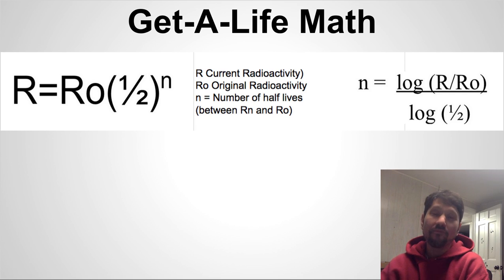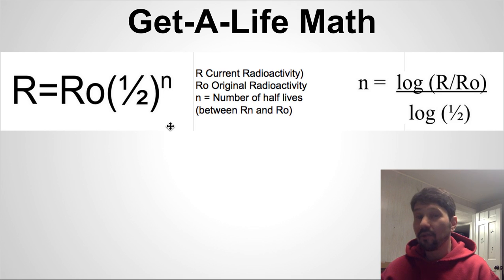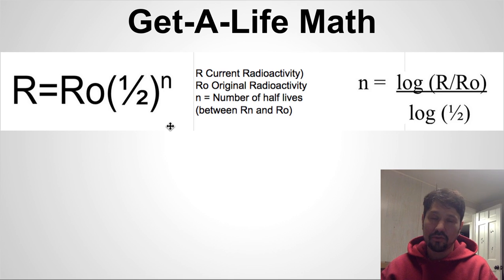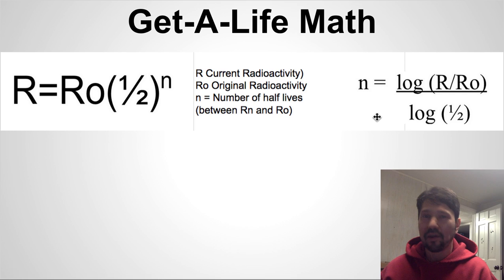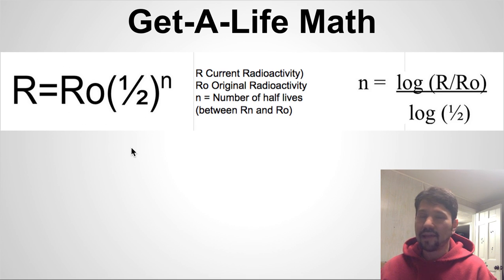One formula you might want to memorize is that the current radioactivity equals the original radioactivity times (1/2) raised to the n, where n is the number of half-lives that occurred during the decay from R₀ to R. This formula — n equals log(radioactivity / original radioactivity) divided by log(1/2) — is just a restatement of the easier-to-memorize formula, and is sometimes useful depending on the kinds of problems you're having.